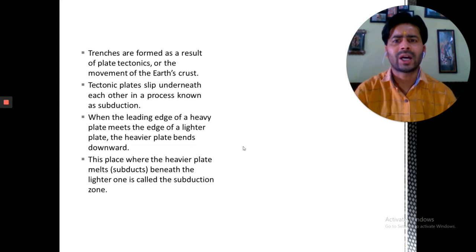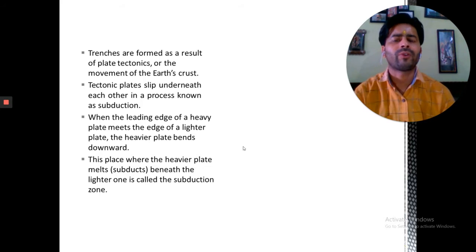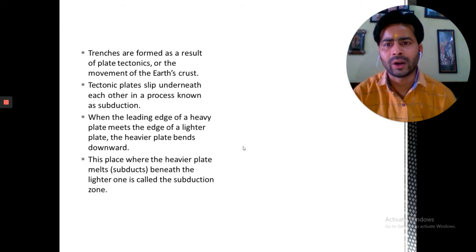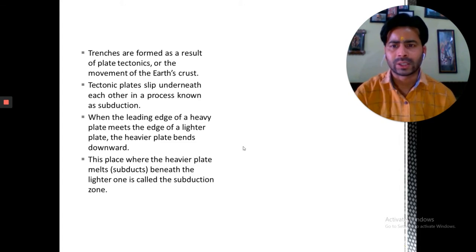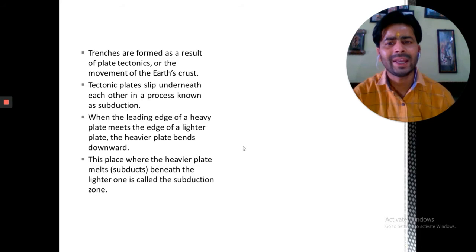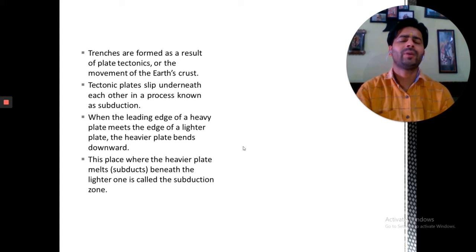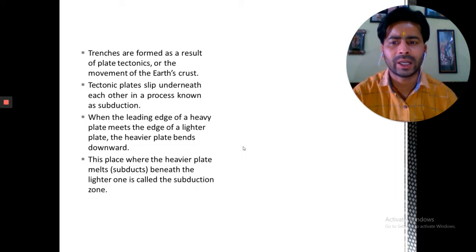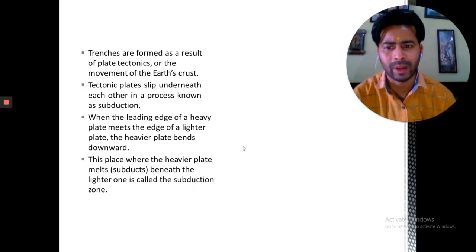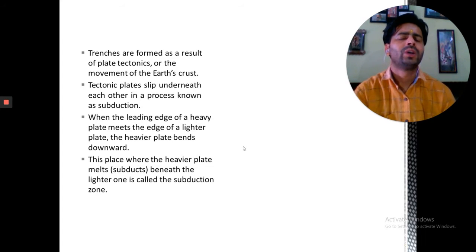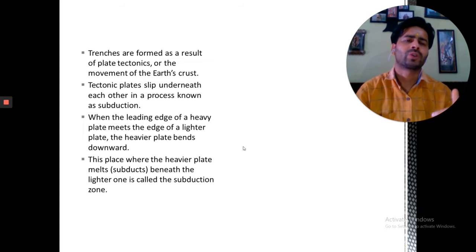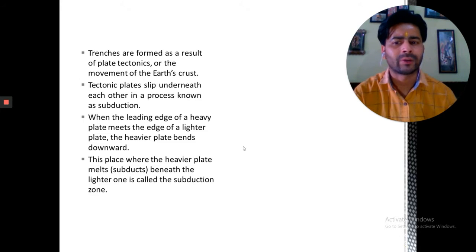Some volcanic arcs including the Aleutians and Iceland, Japan, and the Philippines are good examples of these trenches. Trenches are formed as a result of plate tectonics or the movement of earth's crust. Tectonic plates slip underneath each other in a process known as subduction. When the leading edge of a heavy plate meets the edge of a lighter plate, the heavier plate bends downward. This place where the heavier plate melts is called the subduction zone.